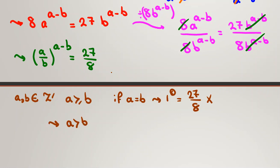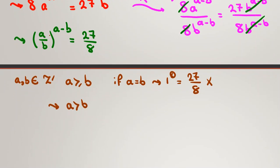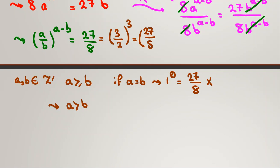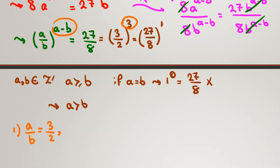Now that a is greater than b, the power is positive, so the only possible cases are: a over b equals 3 over 2 with the power (a minus b) equal to 3, since (3/2)³ = 27/8; or a over b equals 27 over 8 with the power (a minus b) equal to 1. Let's consider these two cases.